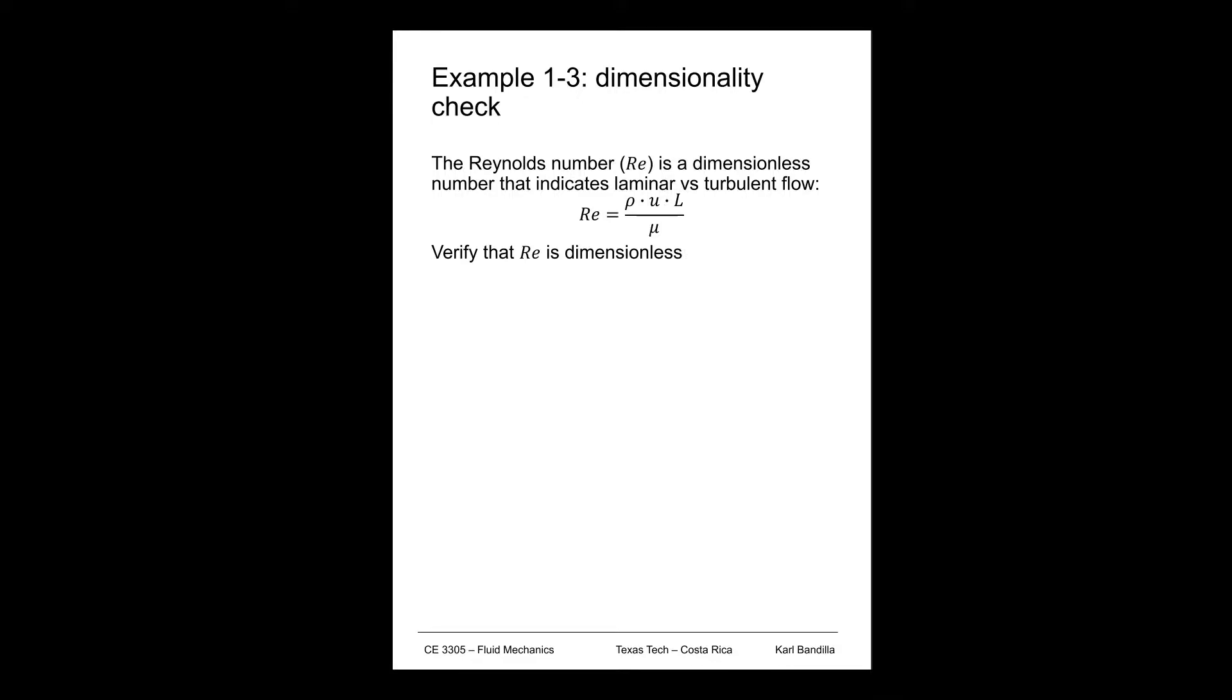So what we'll do is we'll just look at all the units for the different parameters that we have there, and then we'll see if they all cancel out.